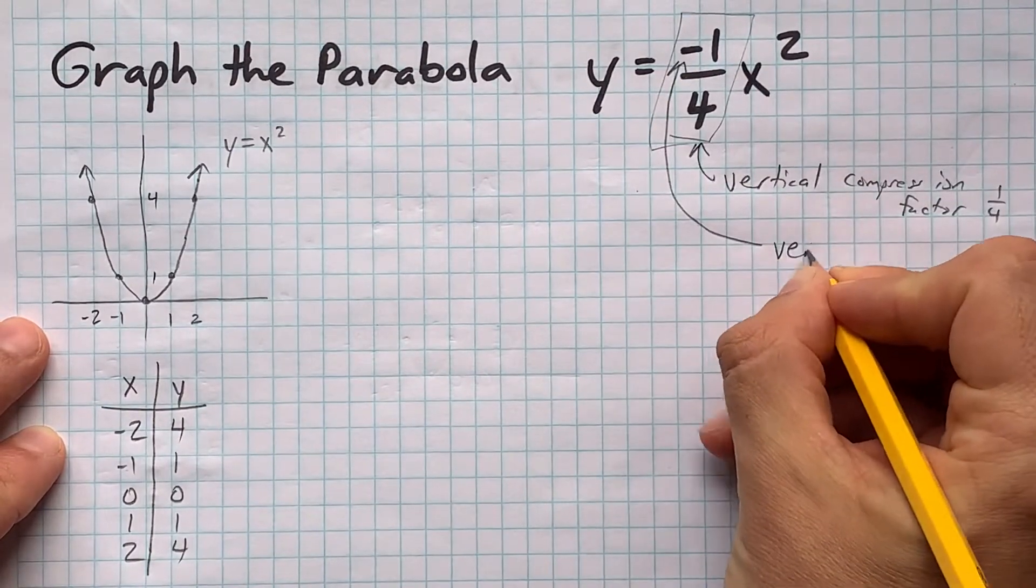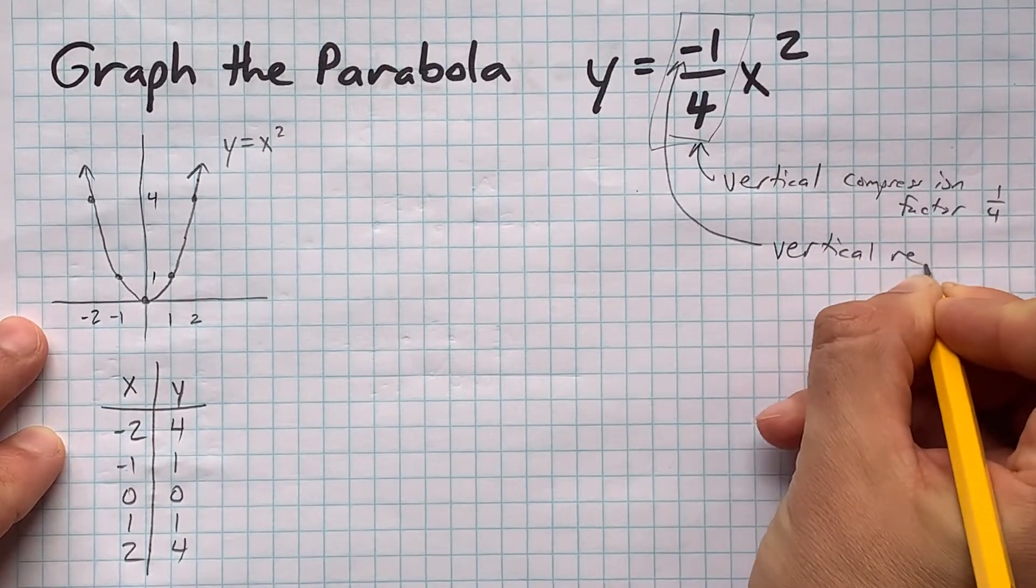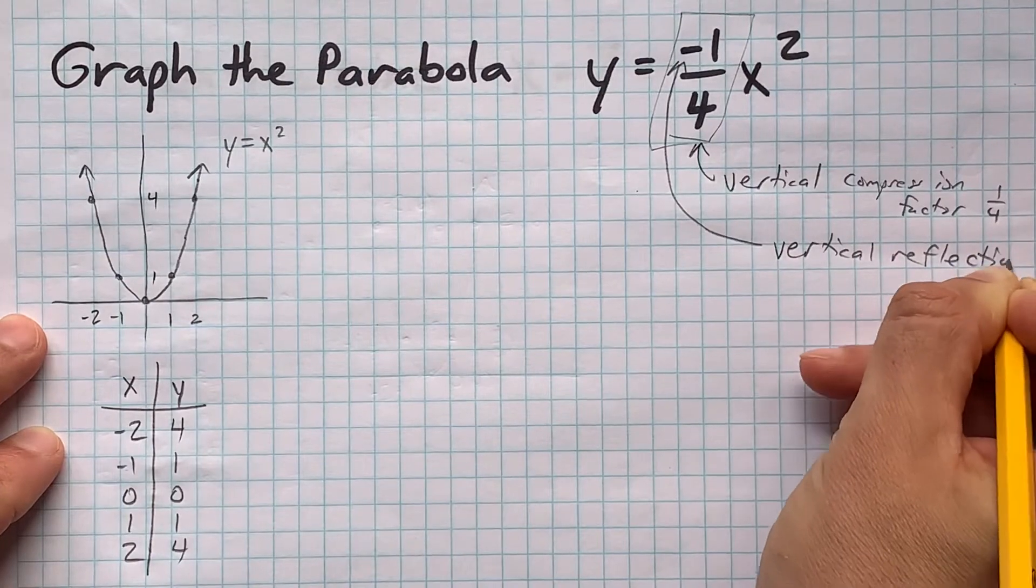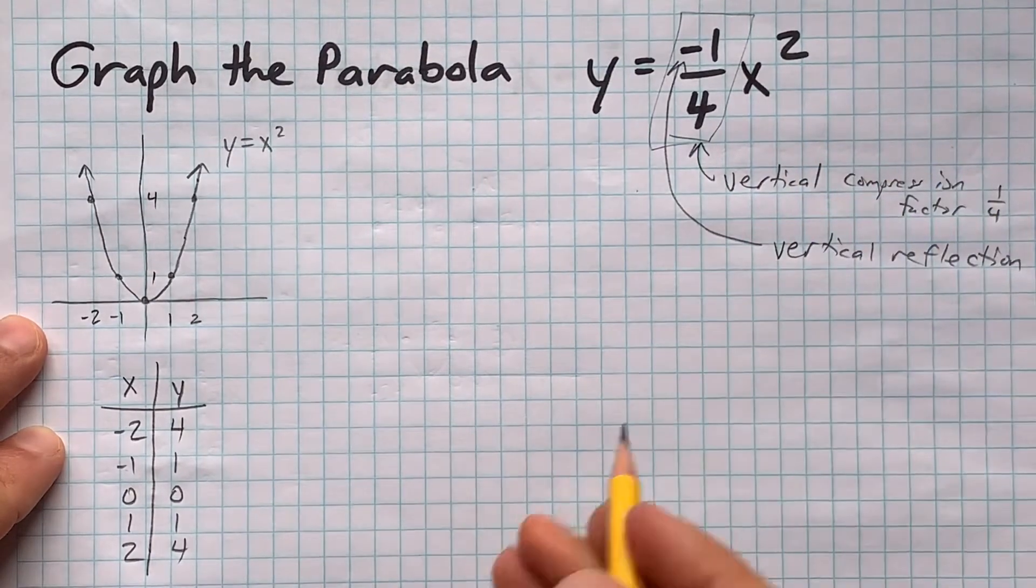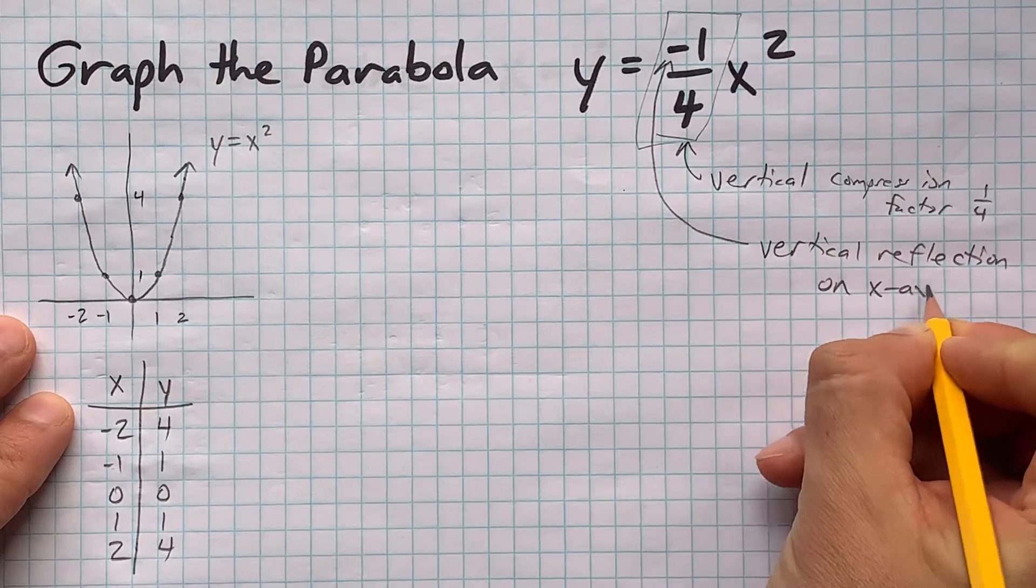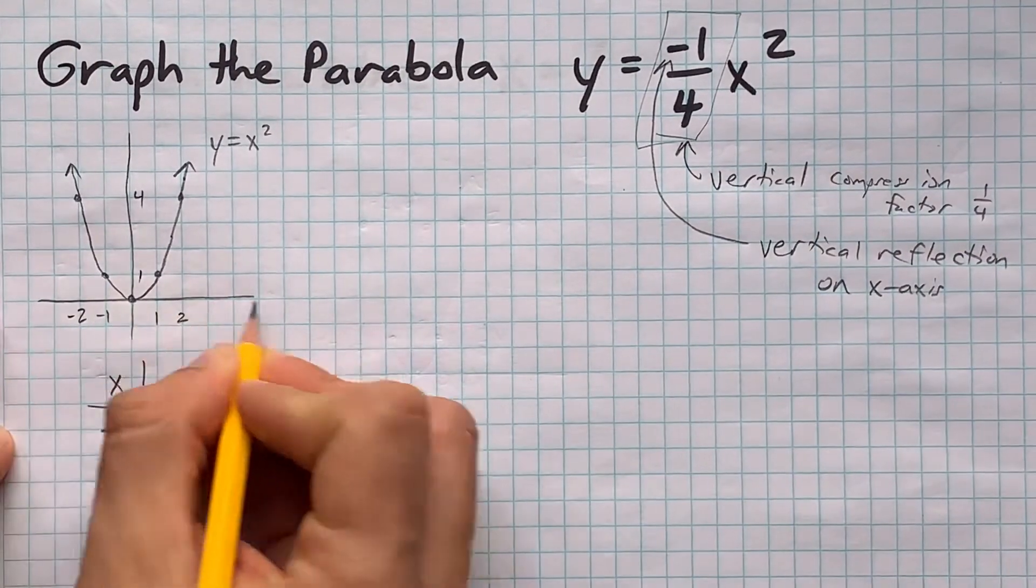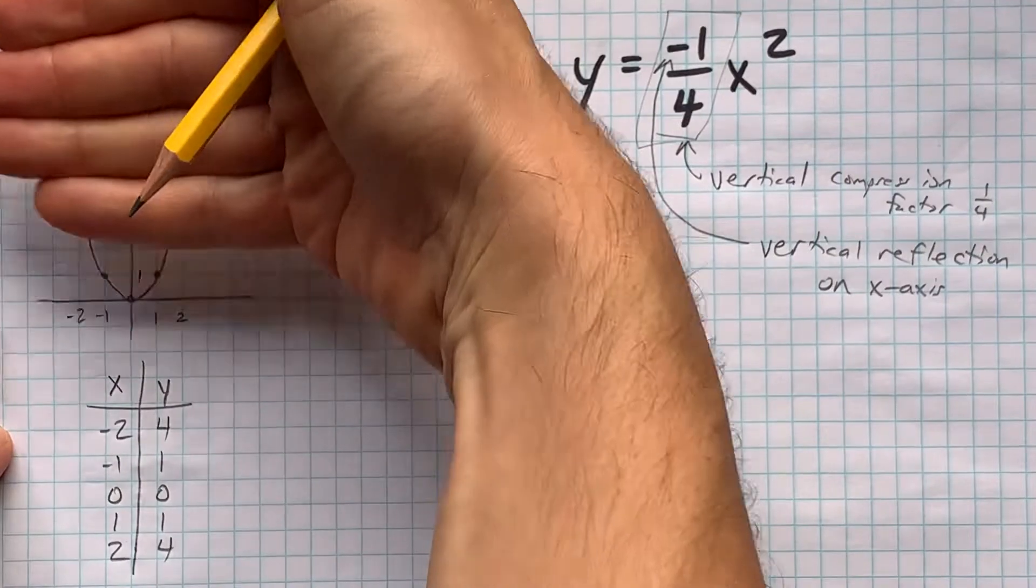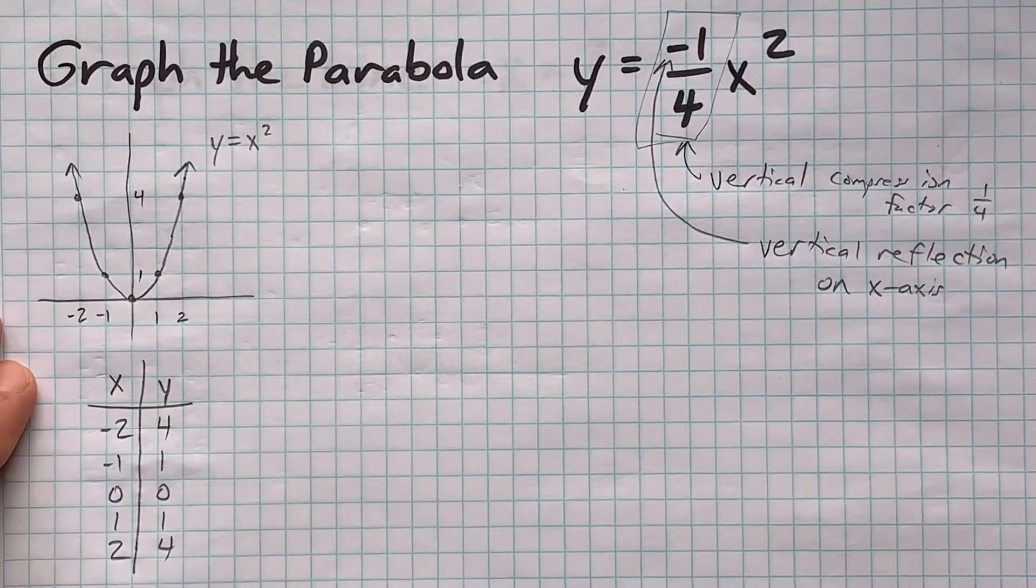The negative, on the other hand, is a vertical reflection. That means the parabola will appear upside down. Some teachers want you to write vertical reflection on the x-axis. That means the x-axis is the mirror, and what at one point pointed upward now points downward.